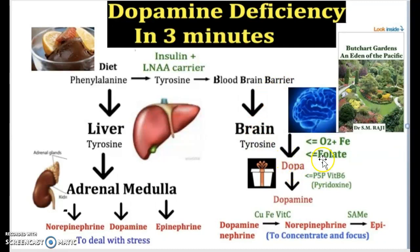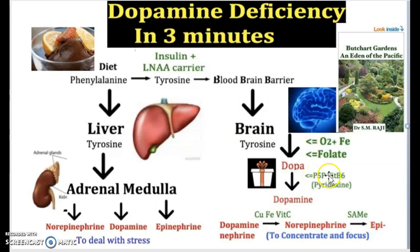Once it has crossed the blood-brain barrier, the tyrosine reaches the brain and wants to convert into DOPA, but this cannot be done until iron, oxygen, and folate are present. Once these are present, it converts into DOPA. From DOPA it then wants to turn into dopamine, which cannot occur unless pyridoxine — also known as P5P and vitamin B6 — is present, after which it will convert into dopamine.